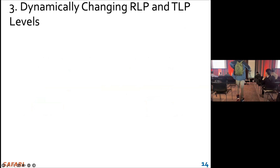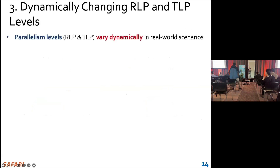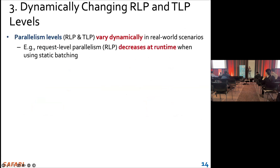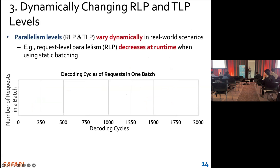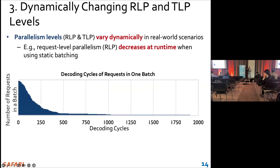Moreover, we find that the parallelism levels RLP and TLP vary dynamically in real-world scenarios. For example, RLP decreases at runtime when using static batching. Here we analyze decoding cycles of requests in one batch, and as you can see, as the decoding cycle increases, the number of requests decreases.